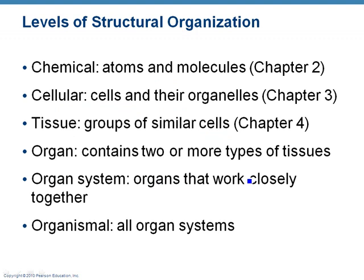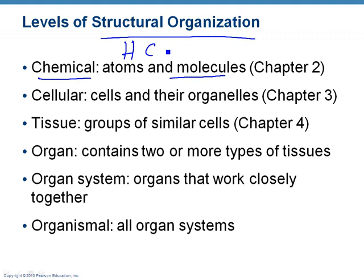When we talk about anatomy, we have to talk about its organization. There are distinct levels of organization. We have the chemical level — we're talking about atoms and molecules, things like hydrogen, carbon, and oxygen. Things like water, salts, and acids — water, sodium chloride, hydrochloric acid. These are the molecules and atoms that form to make the chemicals.